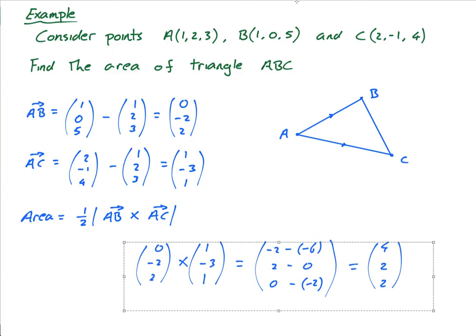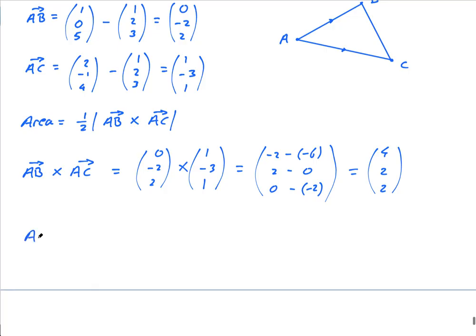This is AB cross AC equals this. So the area equals a half times the magnitude of this. Let's get the magnitude of that first. The magnitude of AB cross AC is equal to the square root of 4 squared plus 2 squared plus 2 squared, which is equal to the square root of 16 plus 4 is 20, plus 4 is 24. So it is root 24.